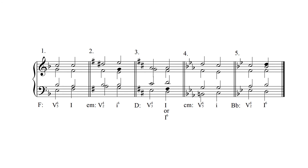Number four, in the key of C minor, you are given a first inversion dominant seventh chord. The chordal seventh is the F in the alto voice, moving down by step to E flat. Next, resolve the leading tone, which is the B natural in the bass voice, moving up by step to C. Then keep the common tone, which is the G in the tenor voice, in the same voice.